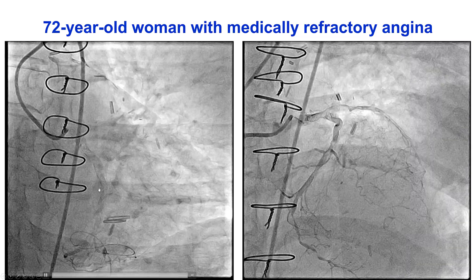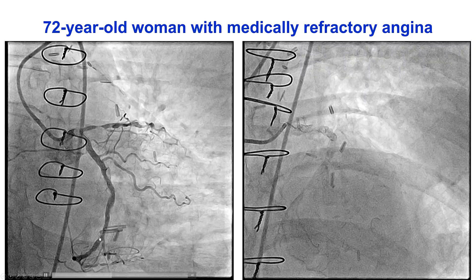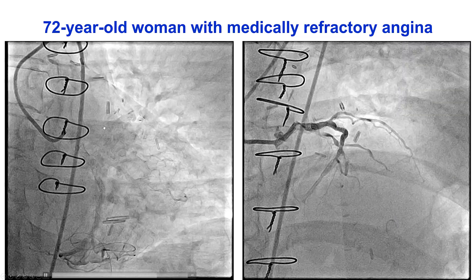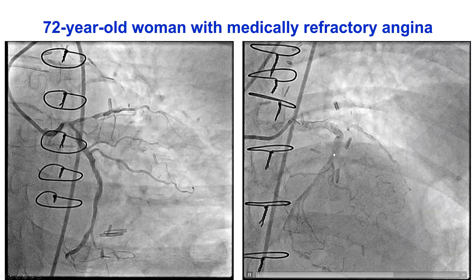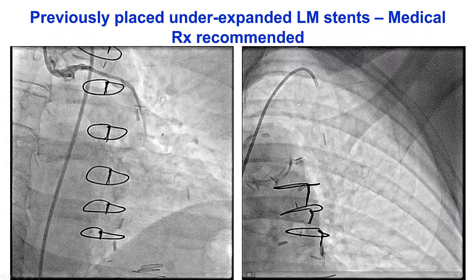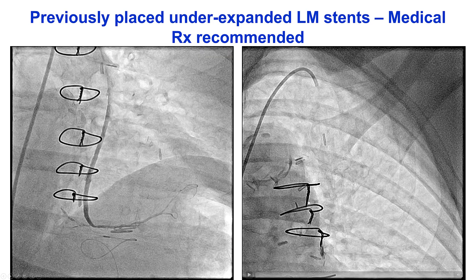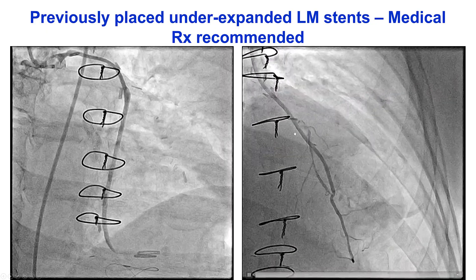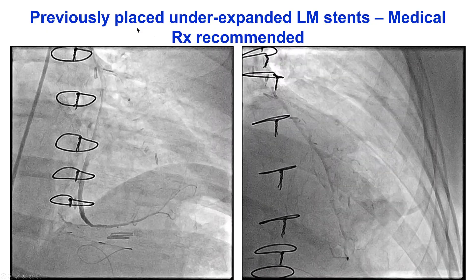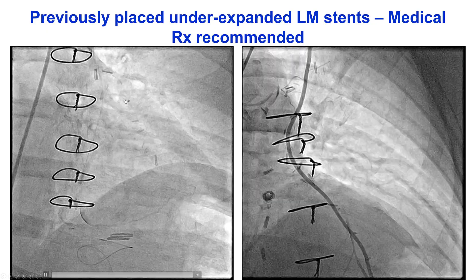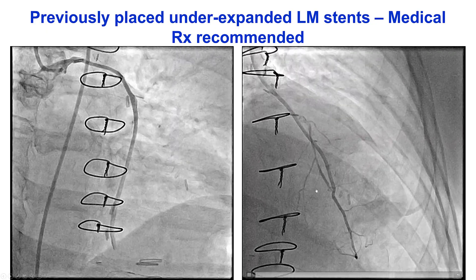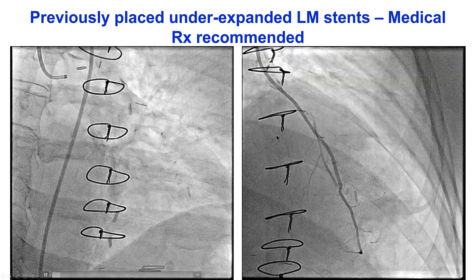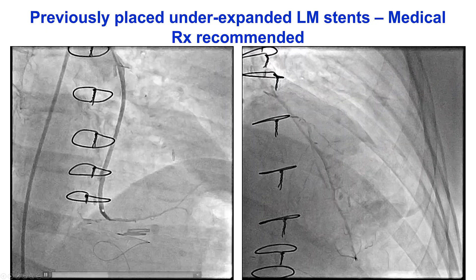She has a left dominant system. We can see that the left PDA is being supplied by the left main, as are the first and second obtuse marginal branches as well as the proximal LAD. She had a patent saphenous vein graft to the obtuse marginal and a patent LIMA to LAD. The patient was recommended to continue with medical therapy under the assumption that the LIMA and the SVG to OM were supplying adequate perfusion to the anterior wall and the lateral wall respectively.